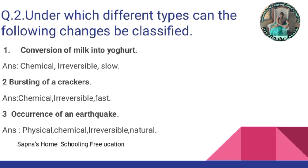Third: bursting of crackers. It is a chemical change because new substances are formed. It is irreversible. And it is a fast change because the explosion happens quickly.